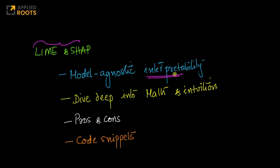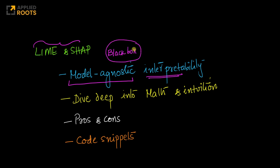These techniques are model agnostic, which means you can apply them to most black box models. Given a black box model that could be very complex, all you know is that given an input xi, it generates yi or yi-hat — that's all you know about it. Given these black box systems, LIME and SHAP can provide very valuable insights through interpretability and explainability.